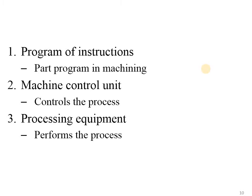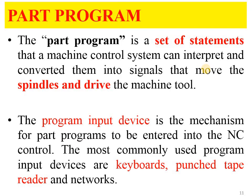The part program is a setup of statements used to give input to machines in the form of NC part programming. It is converted into signals that move to the machine, which then starts moving the spindles for the required output. The part program is interpreted and converted into signals that move the spindles and drives. Commonly used program input devices include keyboards, punch tape readers, and networks.